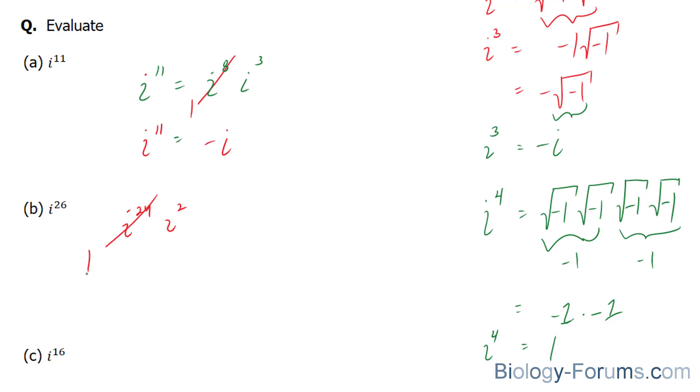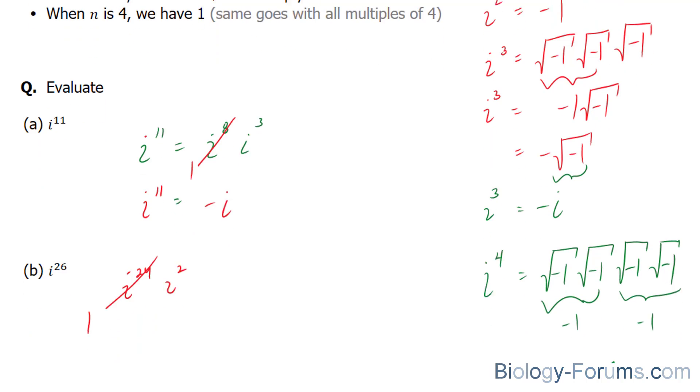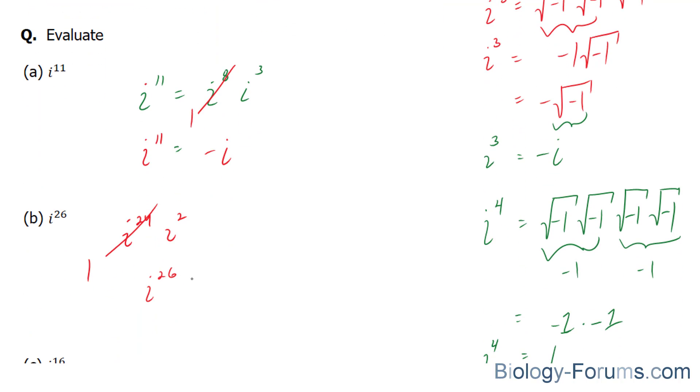24 divided by 4 is equal to 6. So, therefore, this becomes a 1. And i to the power of 2, we learned from up here, is equal to negative 1. So, i to the power of 26 is equal to negative 1.